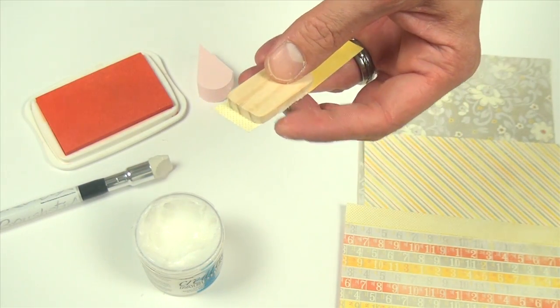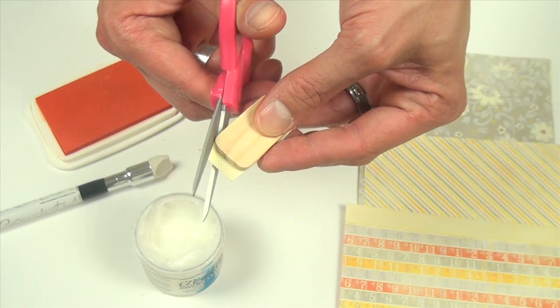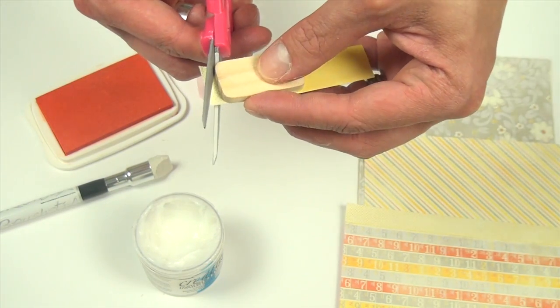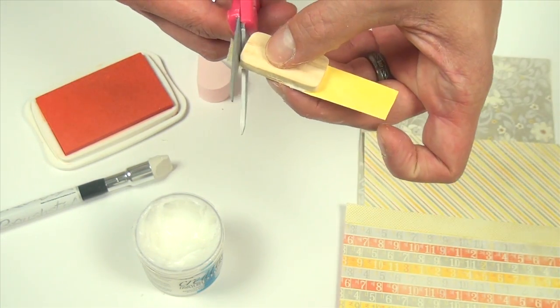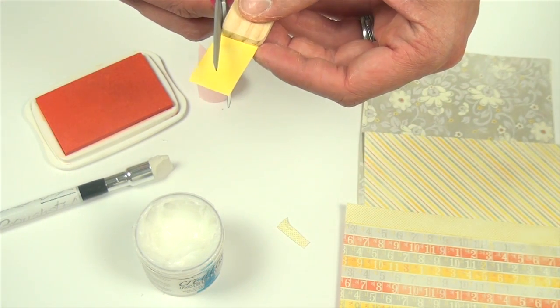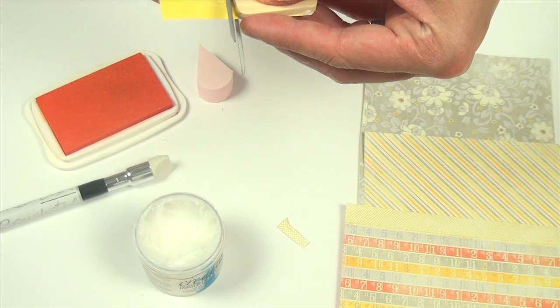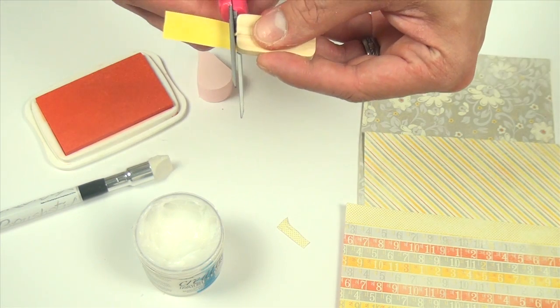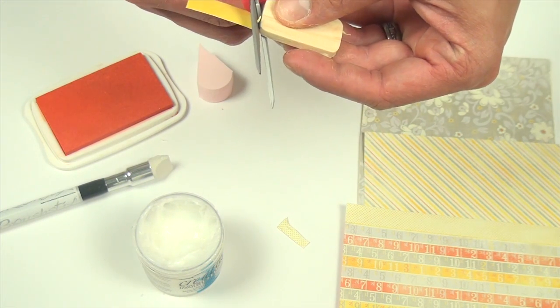Then I'm just going to use a pair of detail scissors and trim right around the edge. You can also use an X-Acto knife if that's your preference for trimming this. And this doesn't have to be exact because we are going to add a little bit of ink to hide our edges when we're finished.